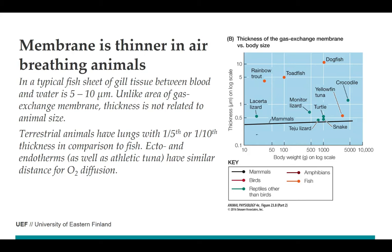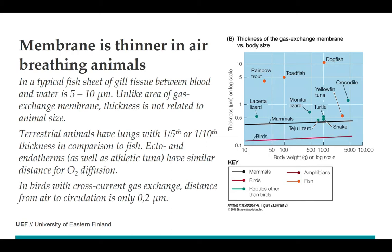Tunas also perform quite well in diffusion speed — it doesn't matter that they have gills rather than lungs. The exception is birds, which have this cross-current gas exchange system where the distance from air to circulation is very small, making them very efficient at extracting oxygen from the environment.